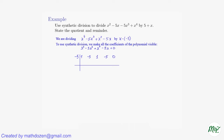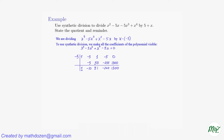Now the division goes as follows. We carry the leading coefficient down, so it's 1. Then we multiply 1 by negative 5 and put it in this spot — that's negative 5. Then we add negative 5 and negative 5 and arrive at negative 10. Then we multiply negative 10 by negative 5 and get positive 50. Then 50 plus 1 is 51. Then we multiply 51 by negative 5 and arrive at negative 255. And negative 5 and negative 255 gives us negative 260. Then multiply negative 260 by negative 5 and we get 1300. Then add 1300 and 0, and get 1300.